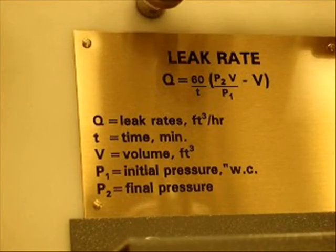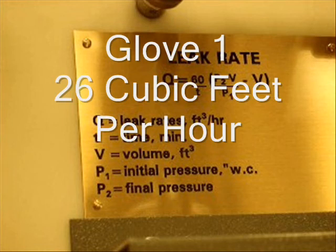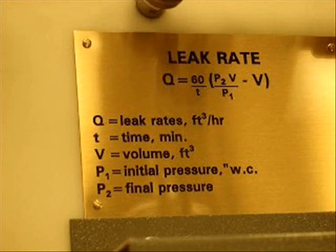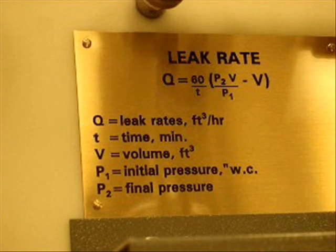After inserting data into the leak rate formula, glove 1 had a leak rate of 26 cubic feet per hour, and glove 2 had a leak rate of 12.6 cubic feet per hour. Glove 1's number is much higher, indicating a faster leak rate. Glove 2's number is much lower, indicating a slower leak rate.